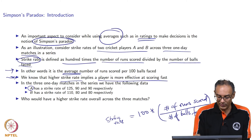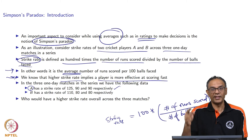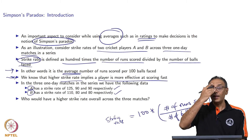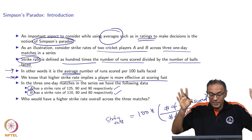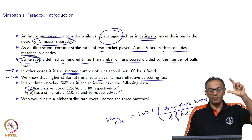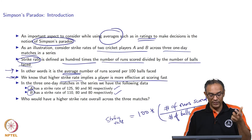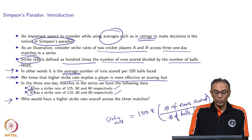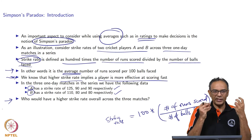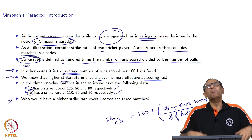Let us look at the scenario. Player A has a strike rate of 125, 90, and 90 in the three one-day matches respectively. Player B has a strike rate of 110, 80, and 80. That is all the information I am giving you — just these strike rates. Player A has 125 versus 110 for Player B in the first match, and 90 versus 80 in the second and third. I am asking you: who would have a higher strike rate overall across the three matches? Typically the first instinct is to say A is better than B in all three cases, so it must be A.